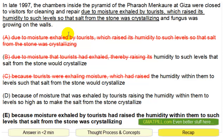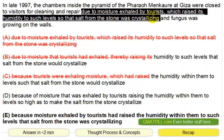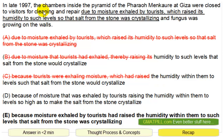As a recap: this is a long sentence. We cut the fluff when we read the sentence to save time and to better understand the question. Then we focus in on what the rationale is for the chambers to close — the chambers were closed due to this reason or because moisture had raised the humidity, and that was causing the salt to crystallize. That's why answer choice E is the correct answer.